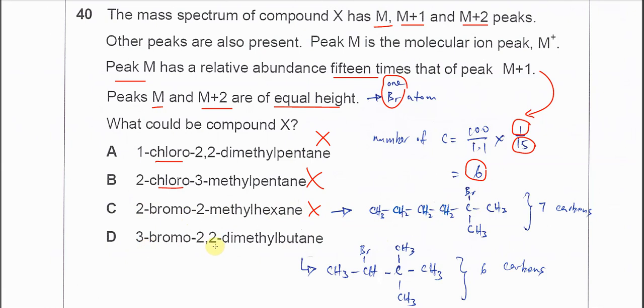For the 3-bromo-2,2-dimethylbutane, the structure is this. So it has 1, 2, 3, 4, 5, 6, 6 carbons. So this is the correct answer: 1 bromine and 6 carbons in the structure.